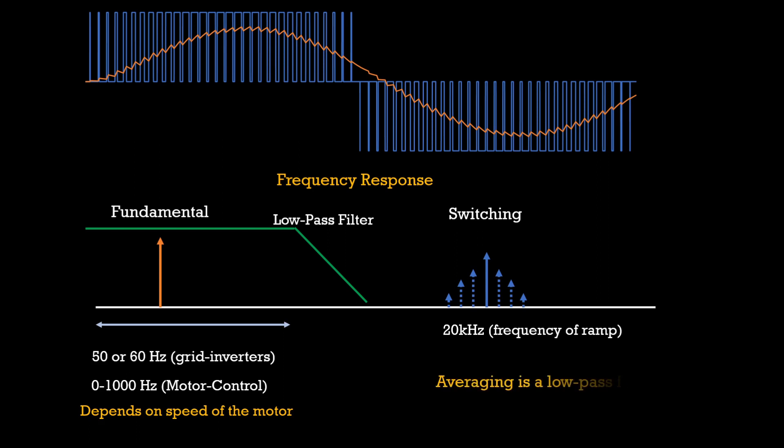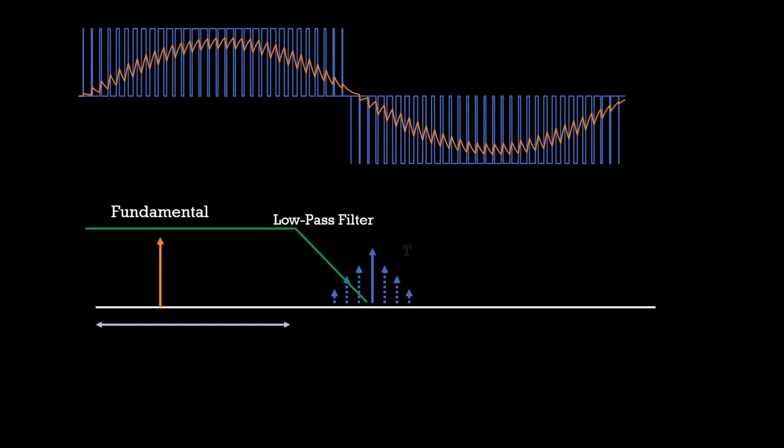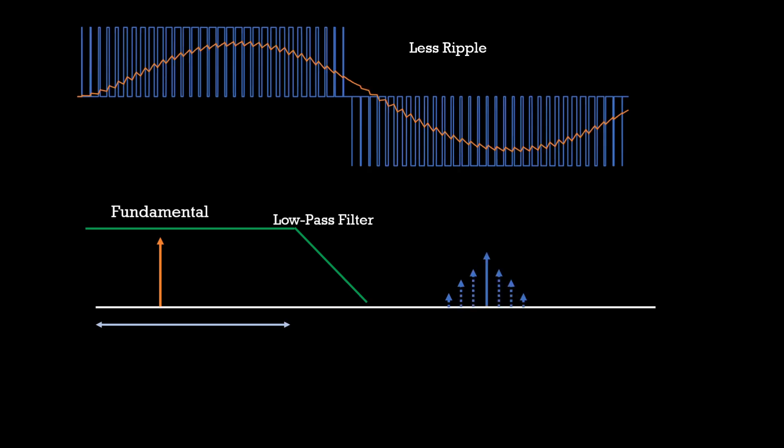If the ramp frequency is near to the fundamental, then its harmonics will interfere and not get suppressed by the low-pass filter. This will lead to more ripples and harmonics in the sinusoidal output that we expect. To avoid the harmonics getting mixed up, we should have the frequency of ramp at least 10 times greater than the fundamental frequency.